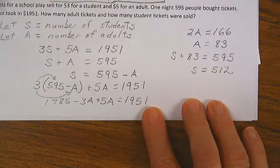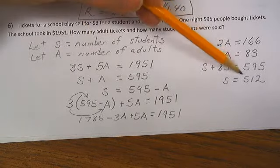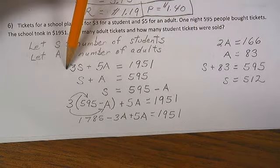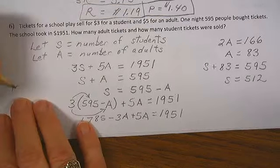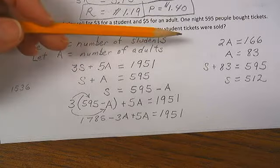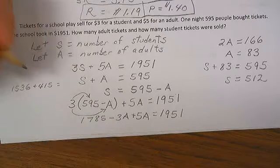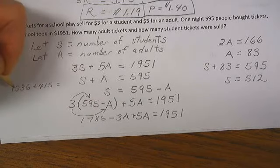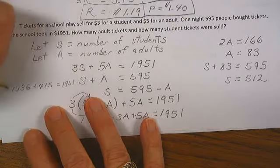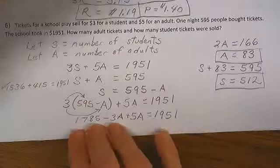It seems like a lot of students and not very many adults, so let's just check. 3 times 512 is 1536. And 5 times the number of adults, 5 times the number of adults is 415. And if I add those two together, I get 1951. So I know that we are right and we had 512 students and 83 proud adults come to see the school play.